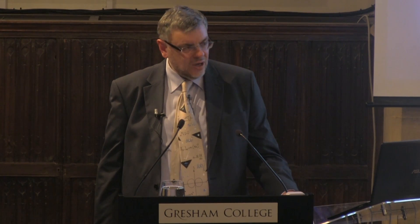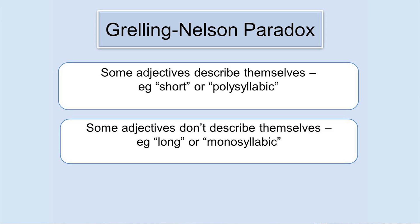On the other hand, Russell's set theory paradox is much more of a genuine problem in the context of naive set theory. Other paradoxes were examined at around the same time. A linguistic analogue of Russell's paradox is due to Grelling and Nelson. Some adjectives, like 'short' or 'polysyllabic', describe themselves — 'short' is a short word, and 'polysyllabic' has many syllables.